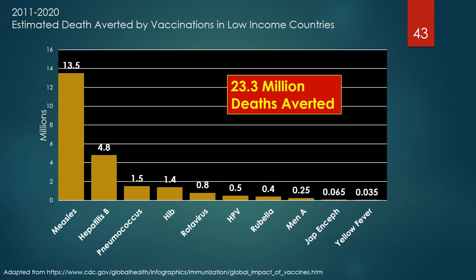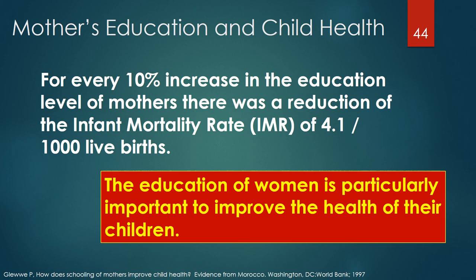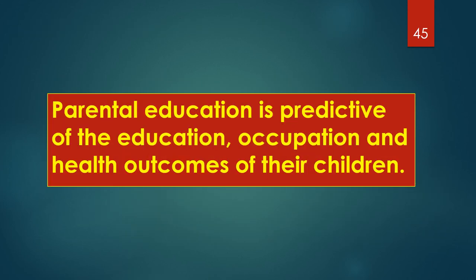Immunizations for measles and hepatitis B accounted for 18.3 million, or 75.5%, of deaths prevented by immunizations during that 10-year period. For every 10% increase in the education level of mothers, there was a reduction in the infant mortality rate of 4.1 per thousand live births. The education of women is particularly important to improve the health of their children. These results provide strong support for the unique predictive role of parental education on the education, occupation, and health outcomes of their children.